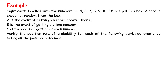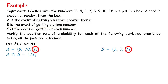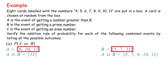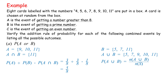Example: 8 cards labeled with the numbers 4, 5, 6, 7, 8, 9, 10, 11 are put in a box. A card is chosen at random from the box. A is the event of getting a number greater than 8. B is the event of getting a prime number. C is the event of getting an even number. Verify the addition rule of probability for each combined event by listing all possible outcomes. A: P(A or B). A = {9, 10, 11}, B = {5, 7, 11}, A intersect B = {11}, A union B = {5, 7, 9, 10, 11}. P(A) plus P(B) minus P(A intersect B) equals 3 over 8 plus 3 over 8 minus 1 over 8 equals 5 over 8. P(A union B) equals n(A union B) over n(S) equals 5 over 8. Hence, it is proven that P(A) plus P(B) minus P(A intersect B) equals P(A union B).